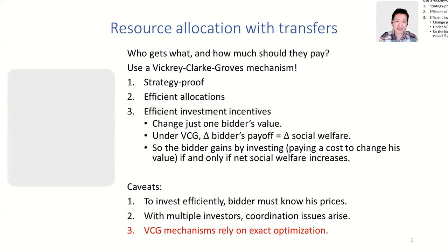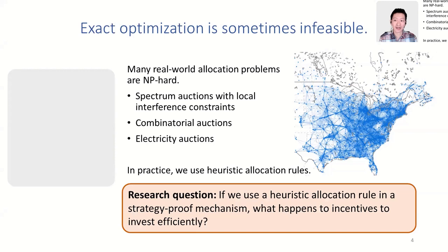VCG assumes that once you have all reports, it is straightforward to compute a welfare-maximizing allocation. That's not always a great assumption because in the real world, exact optimization can be infeasible. There are many real-world allocation problems that are NP-hard.